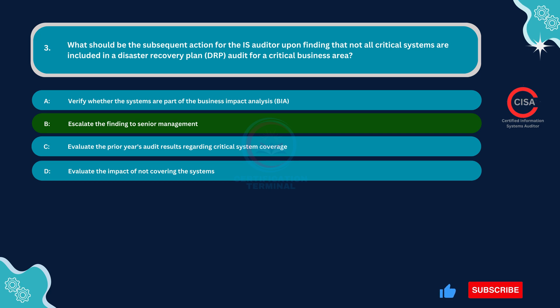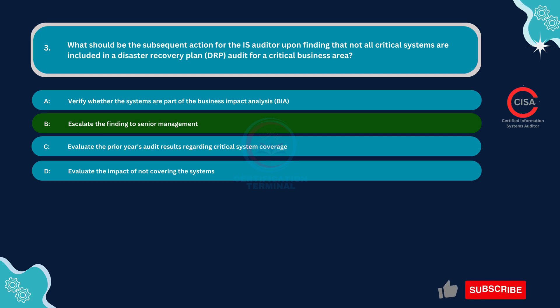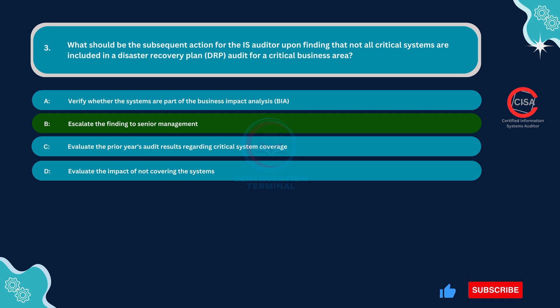This is the most crucial step because missing critical systems in a DRP for a critical business area is a significant control weakness. Senior management needs to be aware of this issue to prioritize its correction and ensure business continuity in case of a disaster.